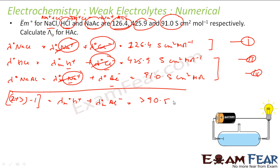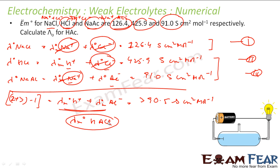Solving this you get 390.5 S cm² per mol, and this value is nothing but λM⁰ of HAc, because HAc breaks into H⁺ and Ac⁻. So with just 3 equations you reframe the algebra to find the molar conductivity of acetic acid at infinite dilution.